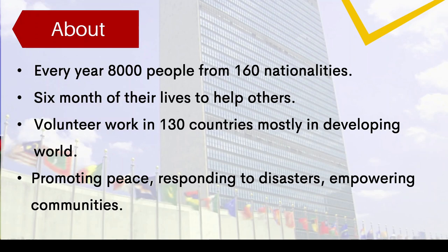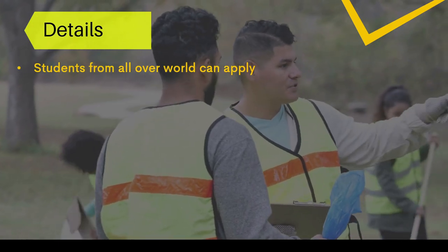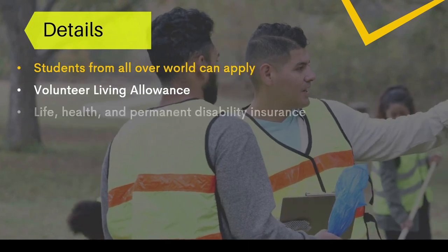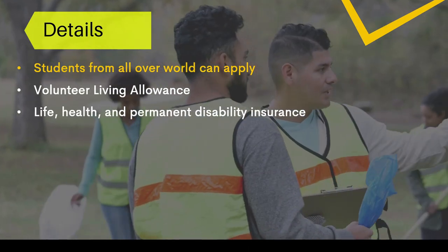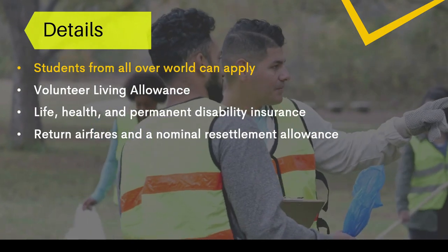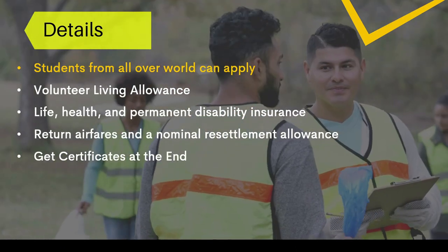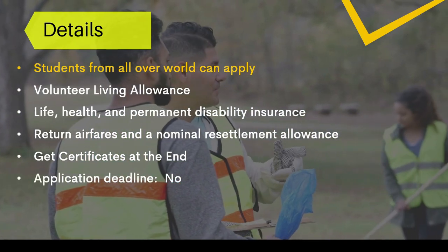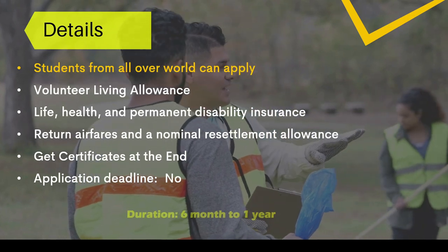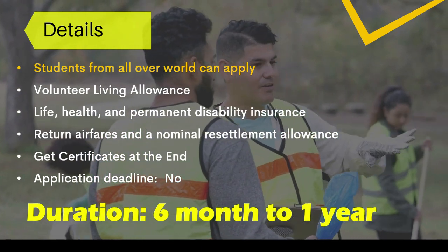If you are interested in doing this volunteer work, students from all over the world can apply. If successfully selected, you will receive a volunteer living allowance. Life, health, and permanent disability insurance will be covered. If you are going abroad, you will have return airfares and a nominal resettlement allowance. At the end of volunteer work, you will get a certificate. There is no particular deadline — just go to the United Nations website for further details. Most assignments are a minimum of six months and a maximum of one year.